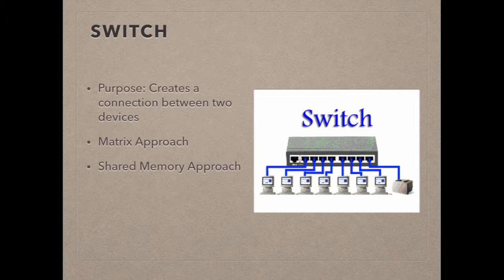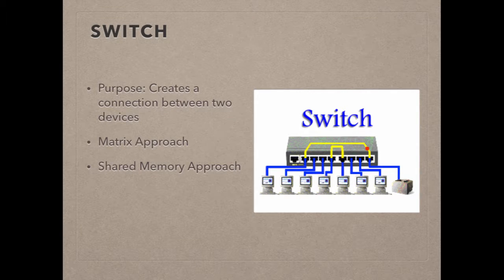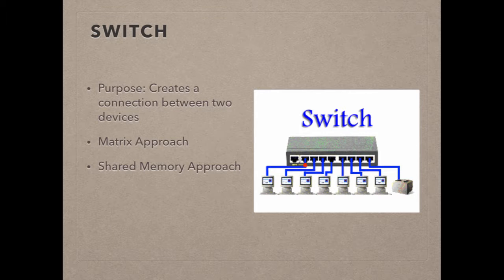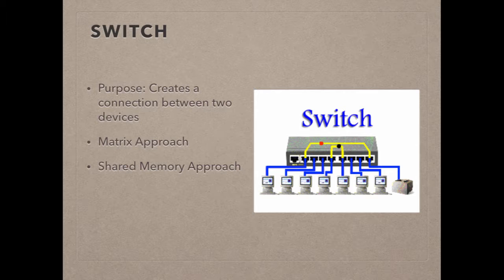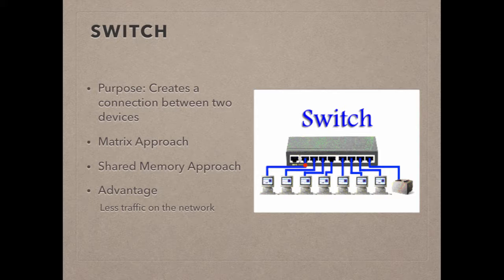A shared memory approach is when data enters the switch and the switch looks at its memory to see where this data needs to go, then sends it through the correct output channel. Because messages are sent directly to the intended computer, instead of being broadcast to all computers as a hub would do, less data traffic is on the network, so the network runs more quickly.